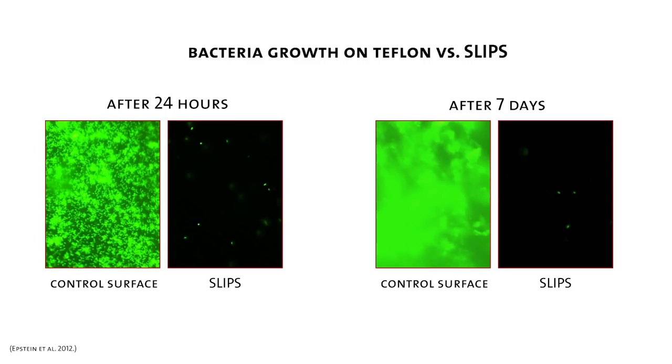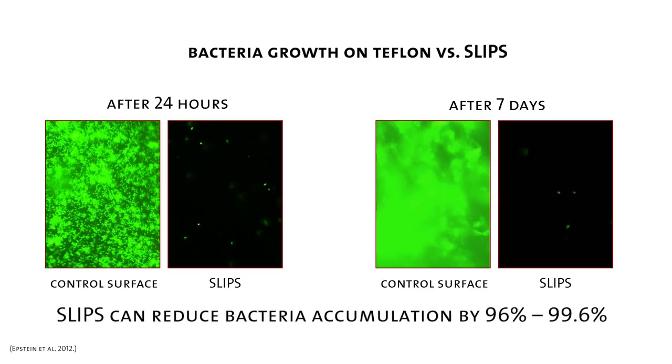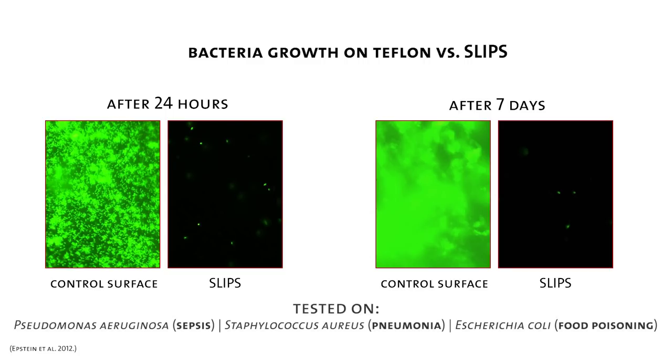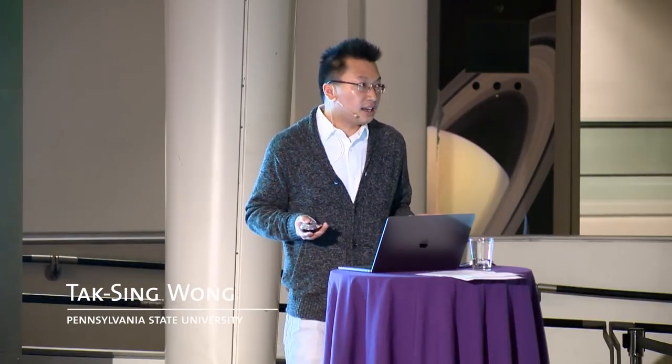We have shown that in the laboratory, slips can effectively reduce bacterial accumulation up to 96% to 99%. And we have tried many kinds of bacteria, including bacteria that cause food poisoning, pneumonia, and sepsis, and slips just works. So far, we have shown that slips can be used as an antifouling coating on a medical device. Indeed, slips can also be used as a sensor.